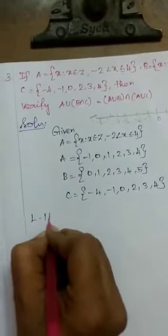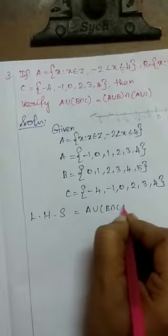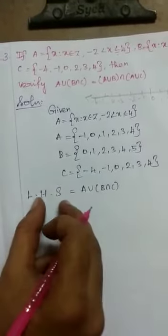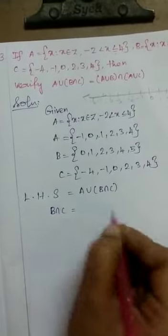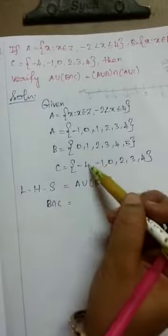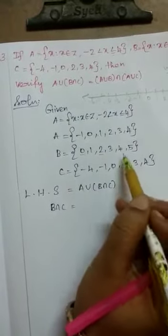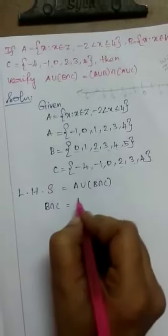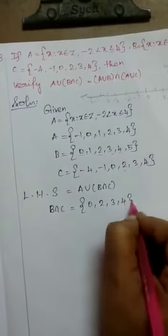LHS is equal to A union of B intersection C. First we have to complete the bracket. B intersection C means finding common elements of B and C. The common elements are: 0 is common, 2 is common, 3 is common, and 4 is common.